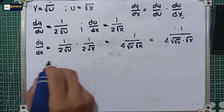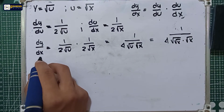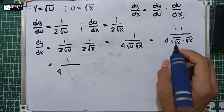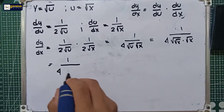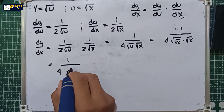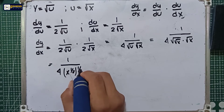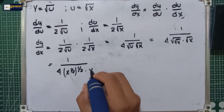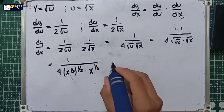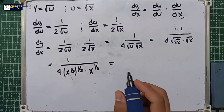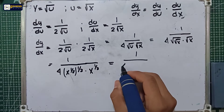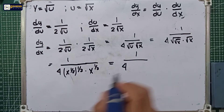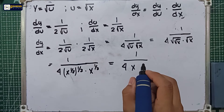We will set this as exponents. So that is equal to 1/4 times the square root of the square root of x, which equals x raised to 1/2 raised to 1/2, multiplied by x raised to 1/2. And x raised to 1/2 raised to 1/2 equals x raised to 1/4, since 0.5 multiplied by 0.5 equals 0.25.